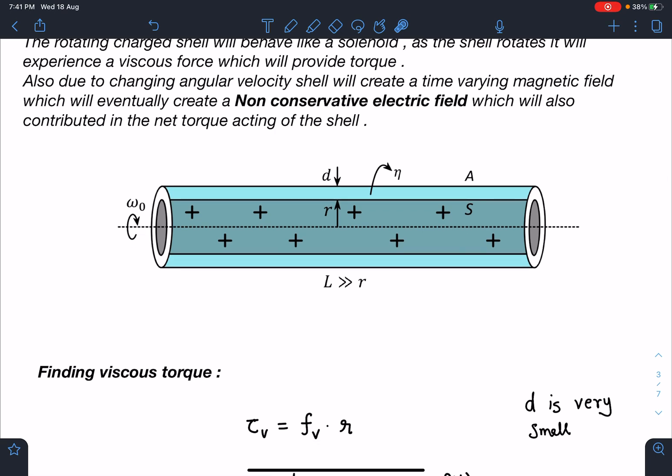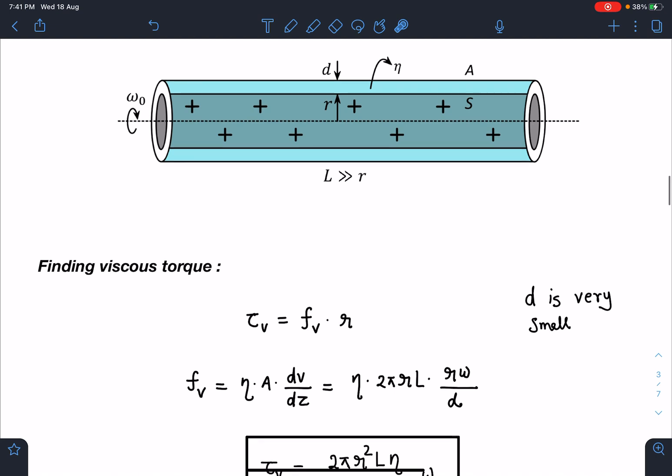Let's do this question stepwise. First, let's find the viscous torque. You can see the viscous torque will be acting opposite to the direction of omega and tangential to the shell everywhere. Since d is very small and we are assuming a linear profile, dv/dz in this gap I can directly write as rω₀/d.